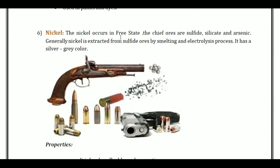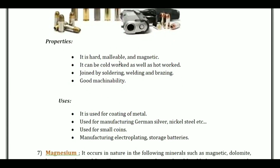Nickel occurs in free state. The chief ores are sulphide, silicate and arsenic. Nickel is extracted from the sulphide ores by smelting and electrolysis process. It has a silver-gray color. It is hard, malleable and magnetic.